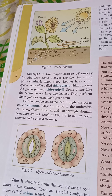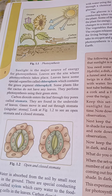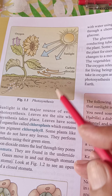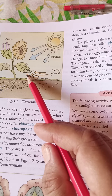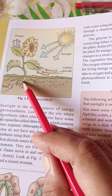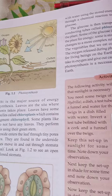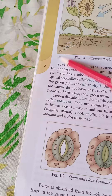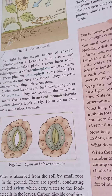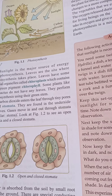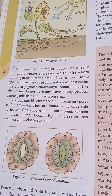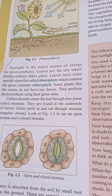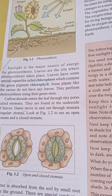You can see figure 1.1, which shows the process of photosynthesis. Sunlight comes from the sun; plants take carbon dioxide from the air and water from the soil. As you know, sunlight is the major source of energy for photosynthesis. This process takes place in leaves because they have special organelles called chloroplasts, which contain the green pigment called chlorophyll.